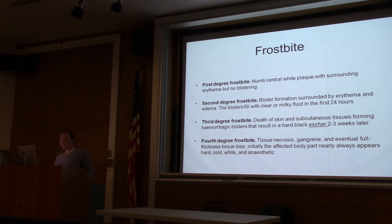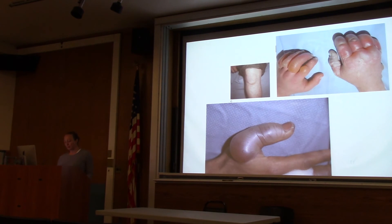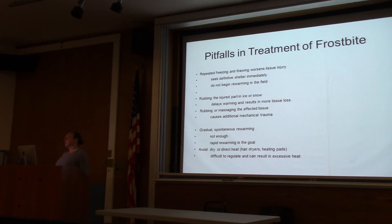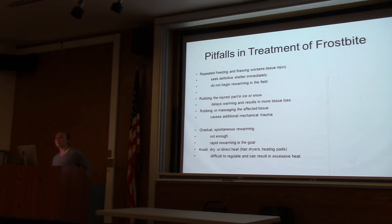There are degrees of frostbite — at fourth degree frostbite, you may lose the extremity. Treatment pitfalls include: repeated freezing and thawing, which worsens tissue injury; rubbing the injured part with ice or snow; massaging affected tissue, which can cause more damage; and gradual or spontaneous warming, which is not sufficient. Rapid rewarming at 40 degrees centigrade or more is recommended. Avoid dry heat — don't use a hair dryer to warm someone.